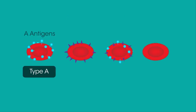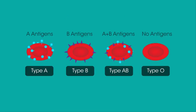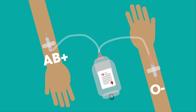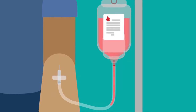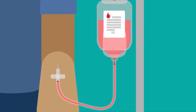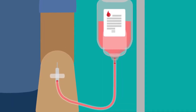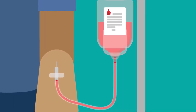In summary, our blood group is determined by the presence or absence of A and B antigens on our red blood cells, which are inherited from our parents. The blood group you are also determines who you can receive blood donations from and who you can donate blood to. And thankfully, now that doctors understand this, patients can safely receive life-saving blood transfusions.